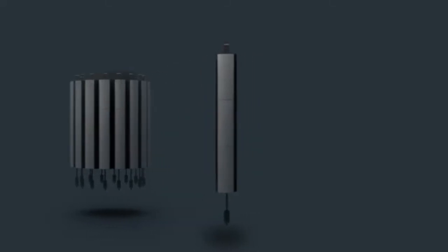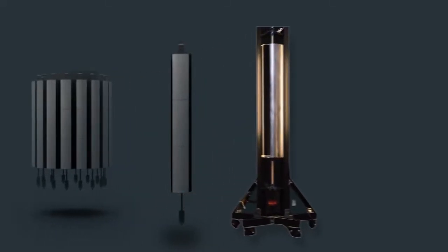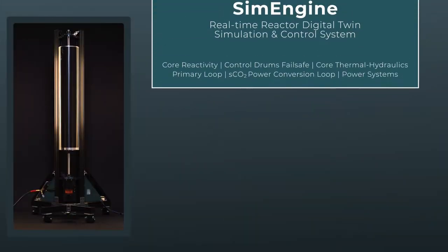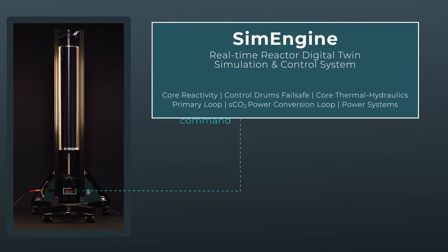Reduced-order models derived from these high-fidelity outputs allow real-time simulation of the reactor and its control system with SimEngine. SimEngine's real-time modeling capability enables direct coupling with physical systems, demonstrated here by the integration of a control drum into the sim.